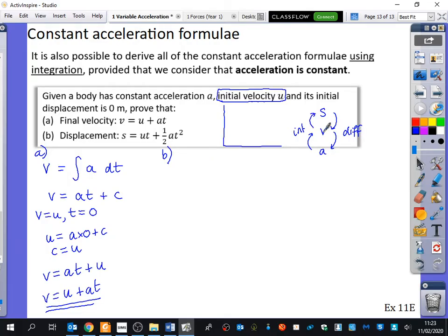Well, I've got what the velocity is, and I want the displacement, so clearly I'm going to have to integrate to be able to find out what this is. So the displacement is the integral of the velocity with respect to time. But I know what the velocity is. I've got that the velocity is U plus AT. So S is equal to the integral of U plus AT with respect to time. Faisal, what will this integrate to with respect to T?